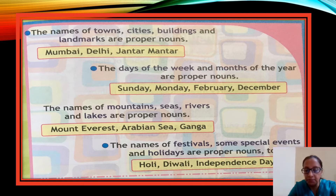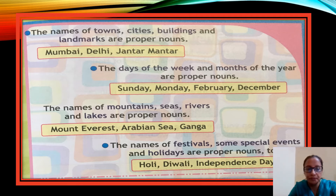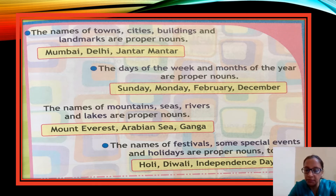Remember: proper nouns always begin with a capital letter — so Sunday, Monday, months of the year, names of places — all start with a capital letter. The names of mountains, seas, rivers and lakes are proper nouns too: for example Mount Everest, Arabian Sea, Ganga — each has been given a particular name.